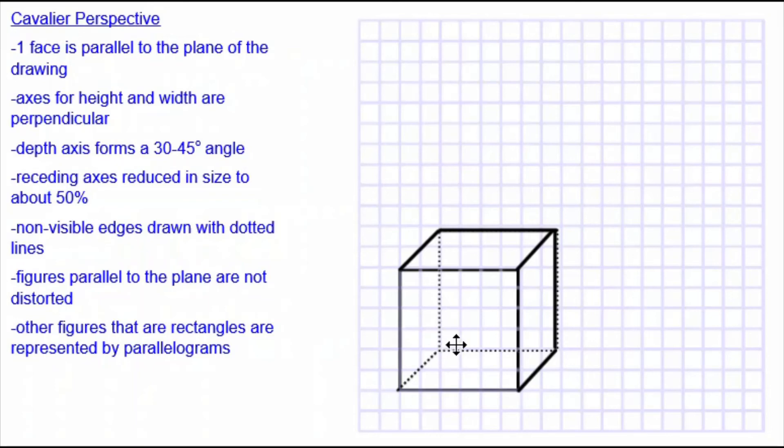Figures that are parallel to the plane are not distorted. Besides the front face, which is not distorted because it's lying on the plane, we have the back face. And that's also not distorted. It's still a square three centimeters side length.